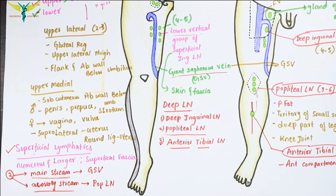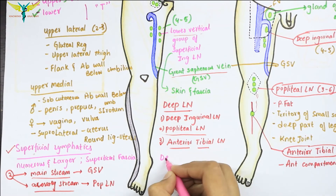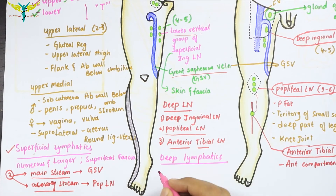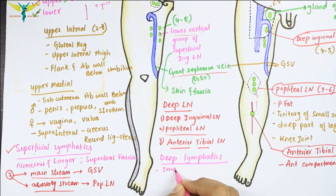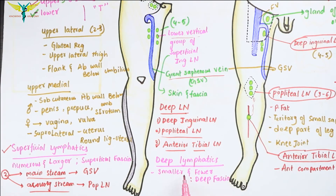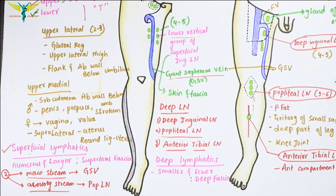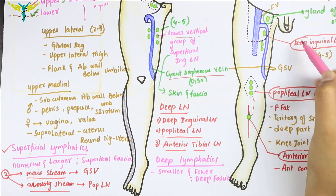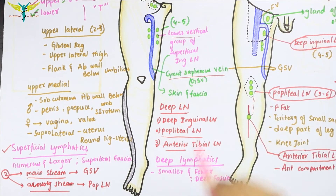Now let's talk about the deep group of lymphatics. The deep lymphatics are smaller and fewer in number, and they drain all the structures lying deep to the deep fascia. These deep lymphatics run along the main blood vessels of the lower limb and drain into the deep inguinal group of lymph nodes.